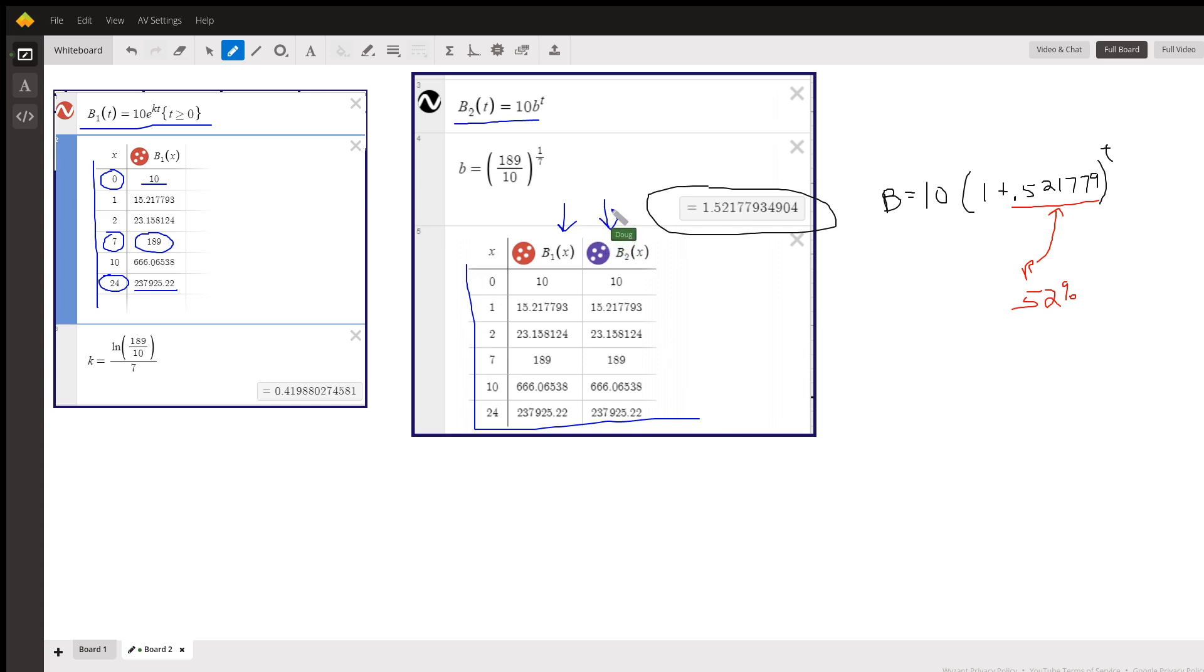But to identify the growth rate, we actually think of this 1.52177 as 1 plus 0.521779. And this portion right here is the growth rate. And if we convert that to a percentage, 52%.